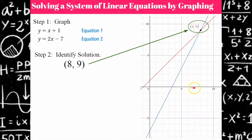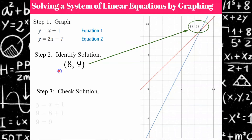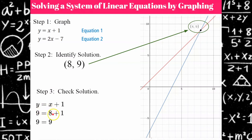Identify this ordered pair. The x-coordinate is 8, the y-coordinate is 9. So my solution is the ordered pair (8, 9). That's step two. Step three — I want to check to be sure that this is correct, so I can do that algebraically. I'm going to take my first equation and replace x with 8 and y with 9 to ensure it is true. Does 9 equal 8 plus 1? 8 plus 1 is 9, so it checks.